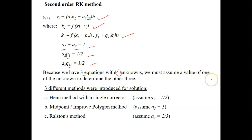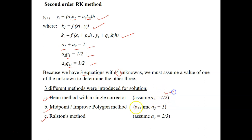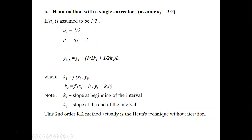We have 3 equations but 4 unknowns (A1, A2, p1, q11), so we must assume a value for one of the unknowns to determine the other three. This leads to three different methods: Heun's method with a single corrector (assume A2 = 1/2), the midpoint or improved polygon method (assume A2 = 1), and Ralston's method (assume A2 = 2/3).